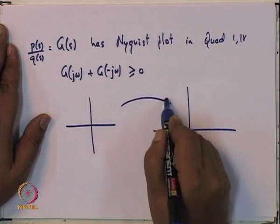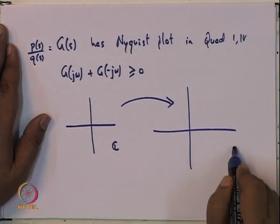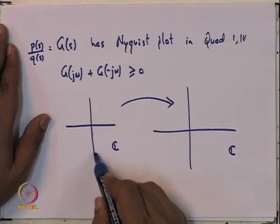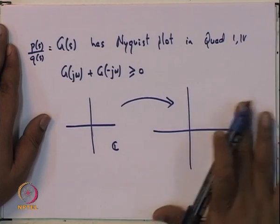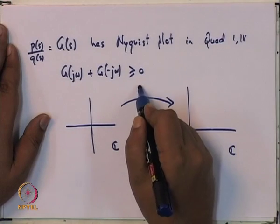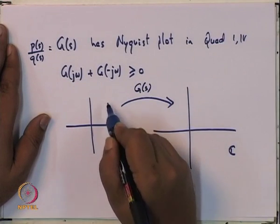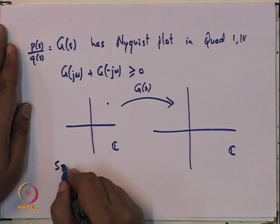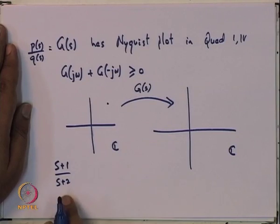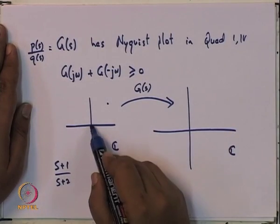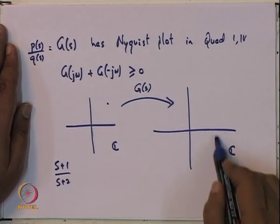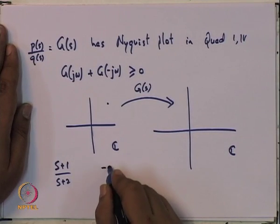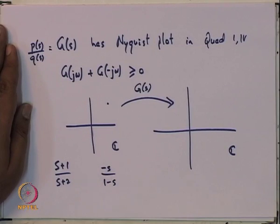We have this map from the complex plane to the complex plane. What we are saying is that the image of the imaginary axis lies in the right half of the complex plane. The map here is G, so any point S goes to G(S). There are several examples of such things; for example, if you use (s+1)/(s+2), this transfer function maps the imaginary axis to some curve in the complex plane.